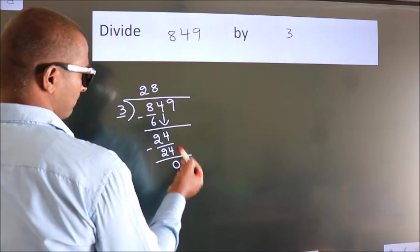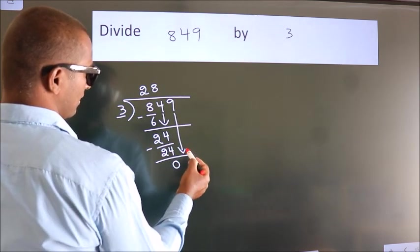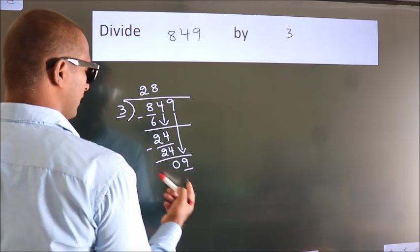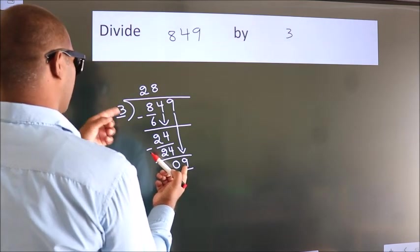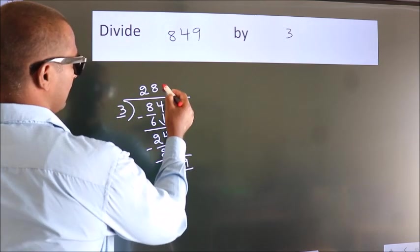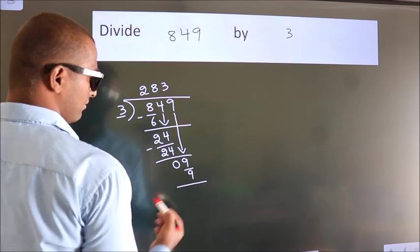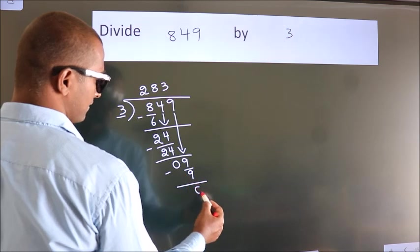After this, bring down the beside number. So 9 down. So 9. When do we get 9? In 3 table. 3 3s, 9. Now we subtract. We get 0.